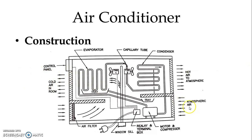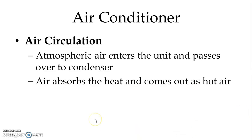Similarly, the atmospheric air from the back side and bottom side is taken into the unit. It passes over the condenser, heat is transferred from the condenser to the atmospheric air, and then the atmospheric air is released to the outside as hot air. This is how air circulation works for both room air and atmospheric air.